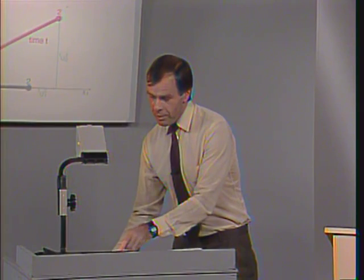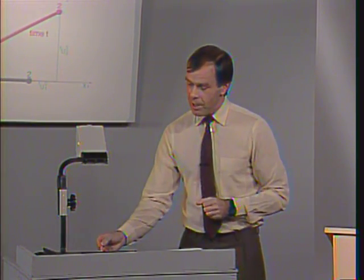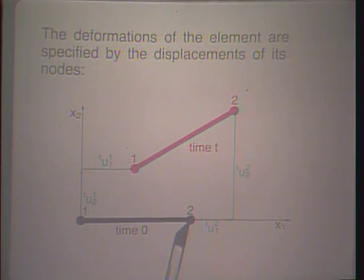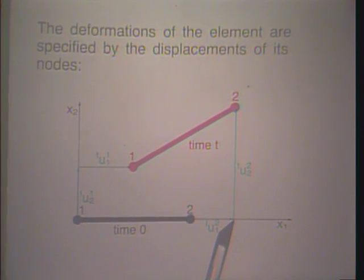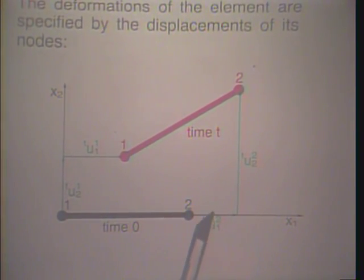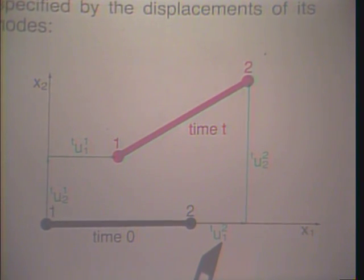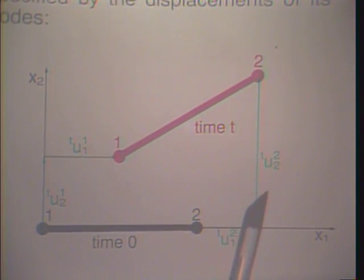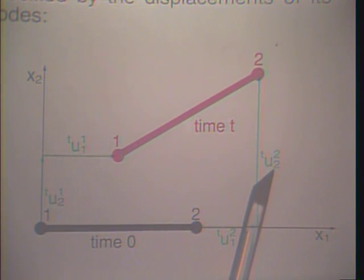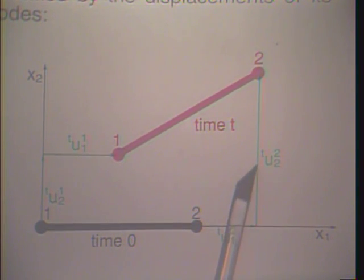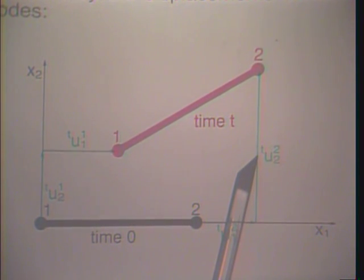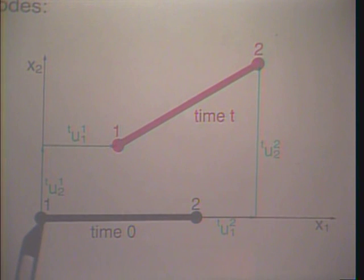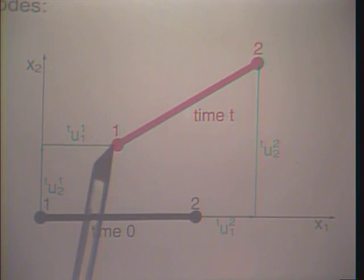Looking at the deformations of the element: at time 0 it was in the original position. The displacement of node 2 is into the x1 direction, denoted t-u in the 1-direction at node 2, and into the 2-direction we have u2. The lower index denotes the coordinate direction, the upper index denotes the node number, and t denotes time t. Node 1 moves similarly, with analogous notation.